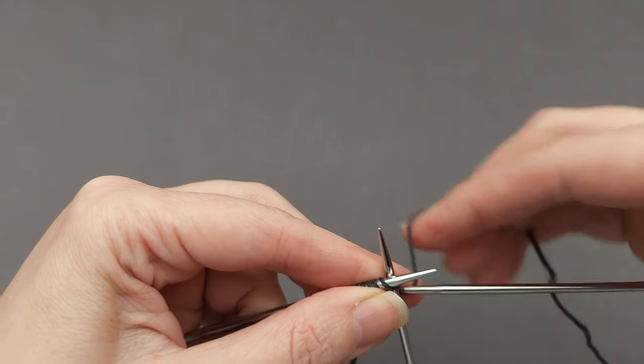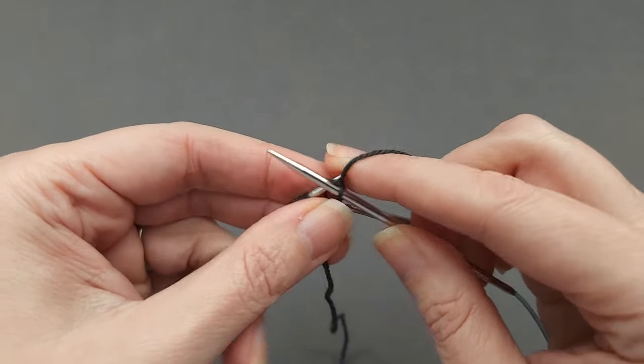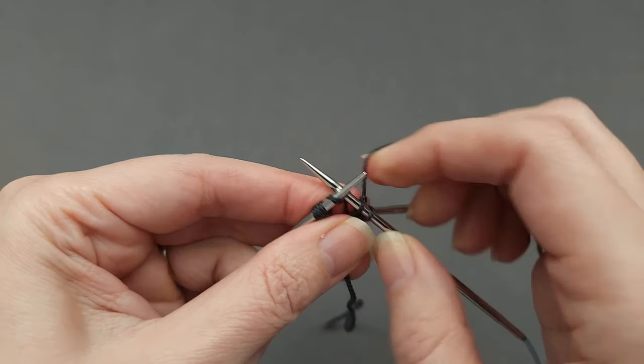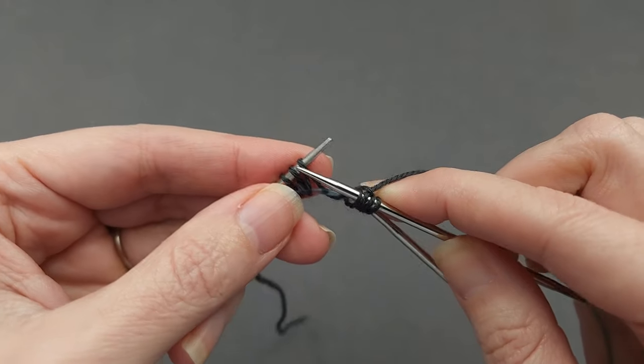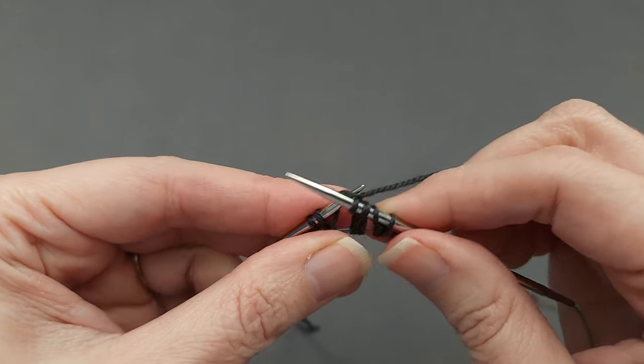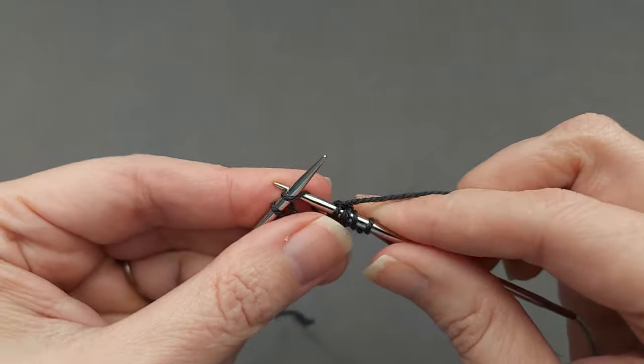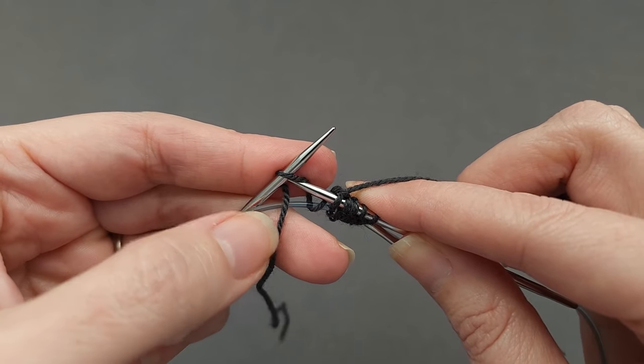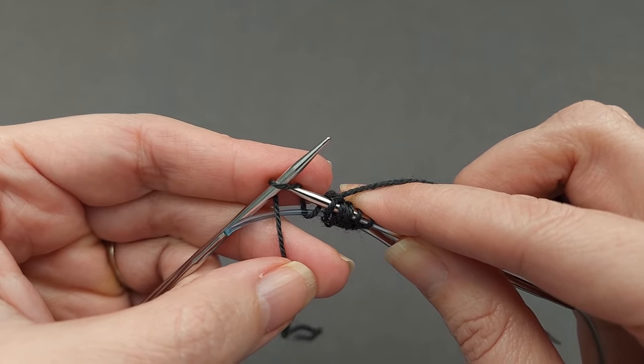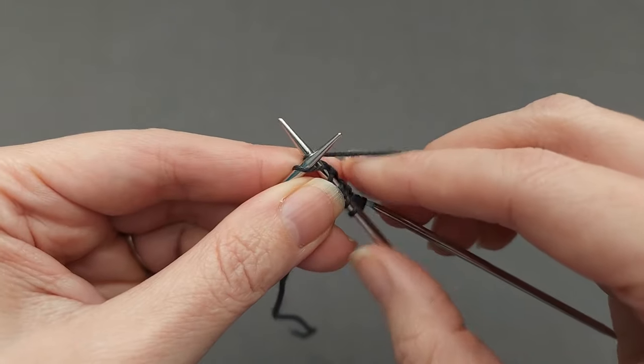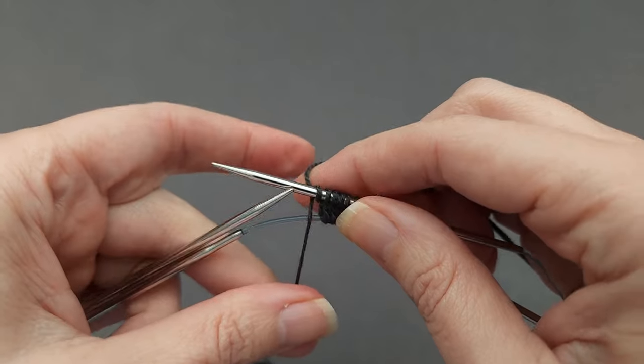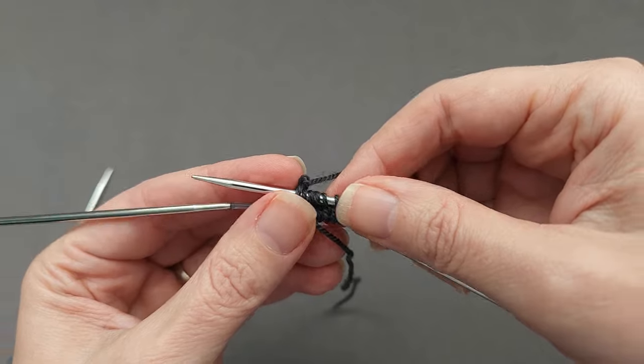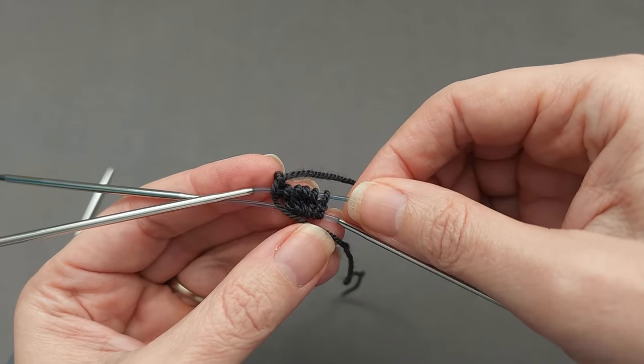Knitting across the first needle looks exactly like you would expect. Be careful on the last stitch that you don't pull the yarn tail through. You want it for right now to be between the needles. At the end, I'm going to slide the stitches I just worked down to the cord.